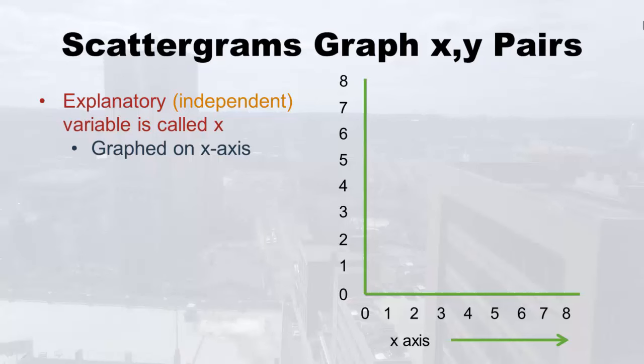The x is always graphed on the x-axis. Remember in algebra you'd have a vertical line — the y-axis — and a horizontal line — the x-axis. So whichever of the pairs is x, expect that to be graphed along the x-axis. It's called the explanatory or independent variable — there's got to be a million names for everything.